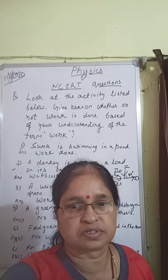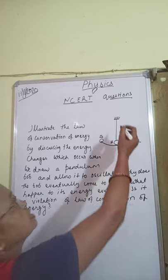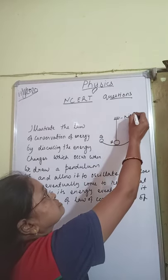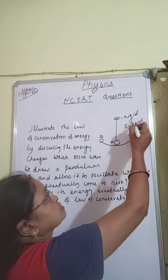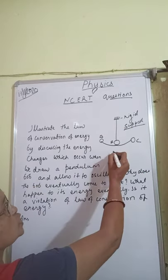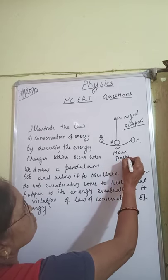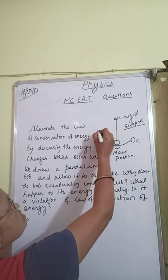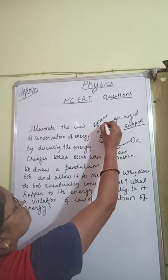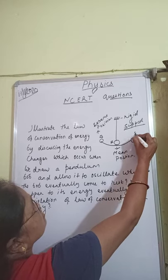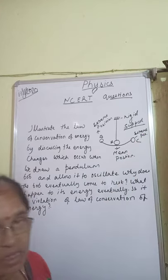This is NCERT exercise question number 1 — please write the reasons also. Now let us see the next question. A pendulum is given with a rigid support. Position A is the mean position, B is one extreme position, and C is also an extreme position.